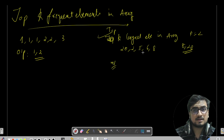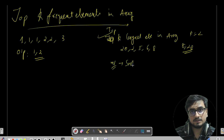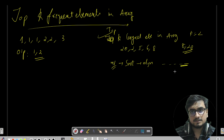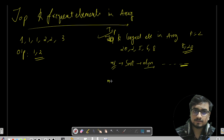One approach to find the top K largest is to sort the array in O(n log n) and return the last two indices. But this takes O(n log n) time complexity.